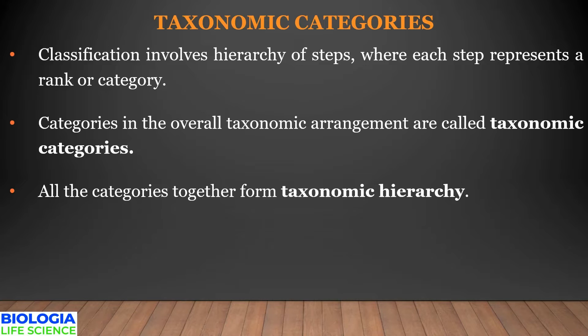Organisms which are closely related to one another are placed together in a group. Groups which have similarities with each other are then combined to form larger groups. Such similar larger groups combine to form even larger ones, and so forth it continues, thus building the taxonomic category. These taxonomic categories come together to form taxonomic hierarchy.